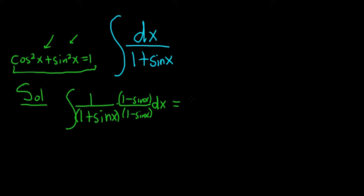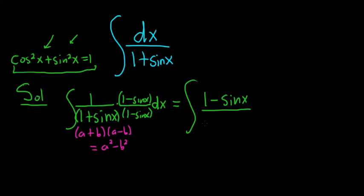So in the numerator, we simply end up with 1 minus sine x. And in the denominator, we want to use the difference of squares formula. So recall if you have a plus b times a minus b, that's equal to a squared minus b squared, right? Good stuff. So this will be 1 squared minus sine squared. And then we have our dx.